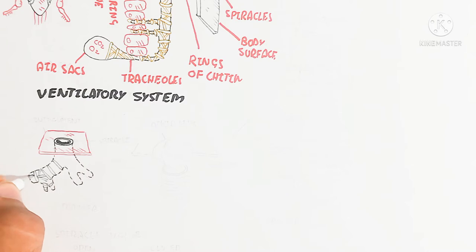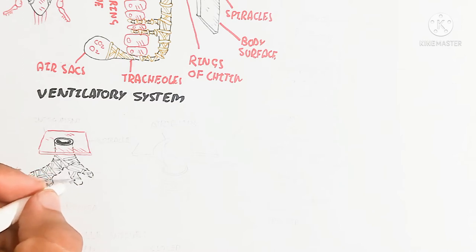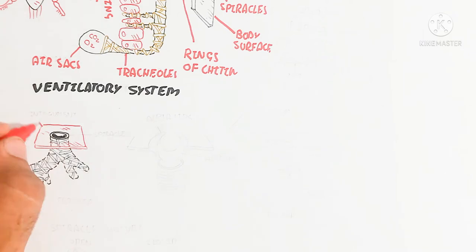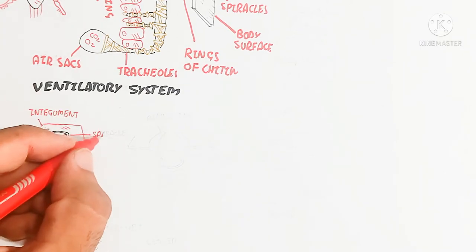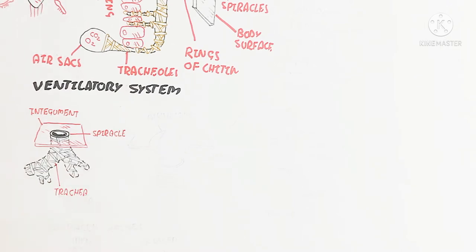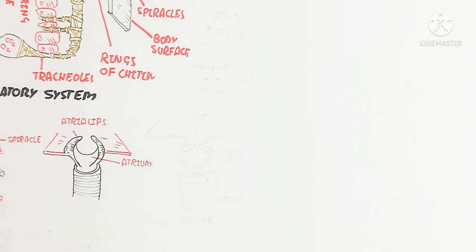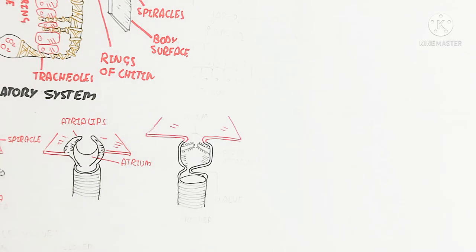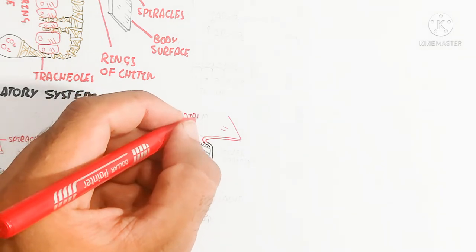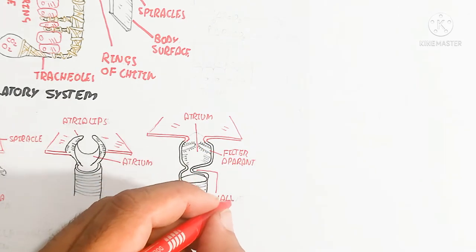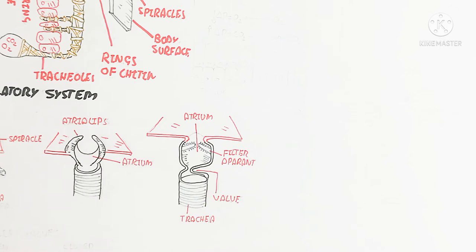The ventilatory system in different arthropod insects contains different types of spiracles. The integument contains open spiracles connected to the trachea. Some spiracles have atrial lips present, with an atrium inside leading to the trachea. The atrial lips are used for opening and closing, like stomata opening and closing in plants.